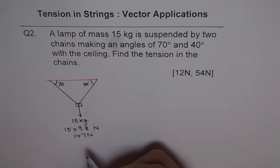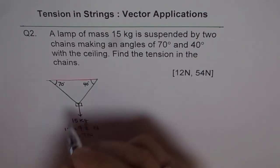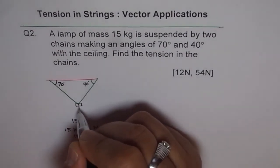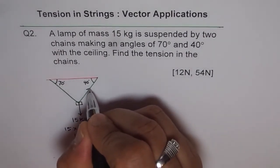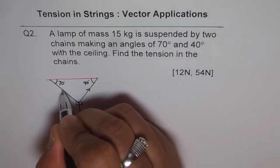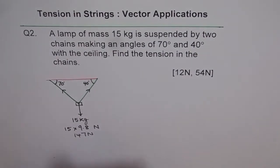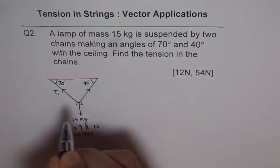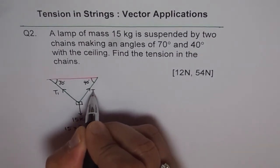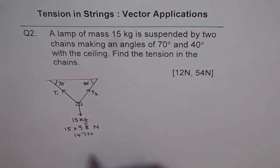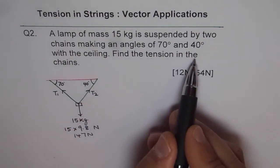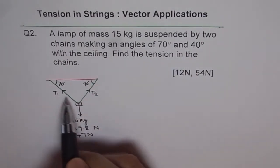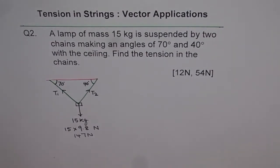Now what is happening is that because of this downward force there is tension in the strings. So these tensions, let me call them T1 and T2. Find the tensions in the chains — these are the two tensions we need to calculate. That is the real question.